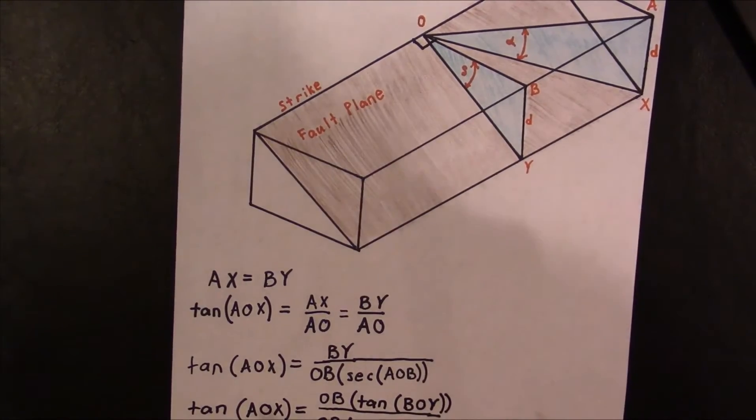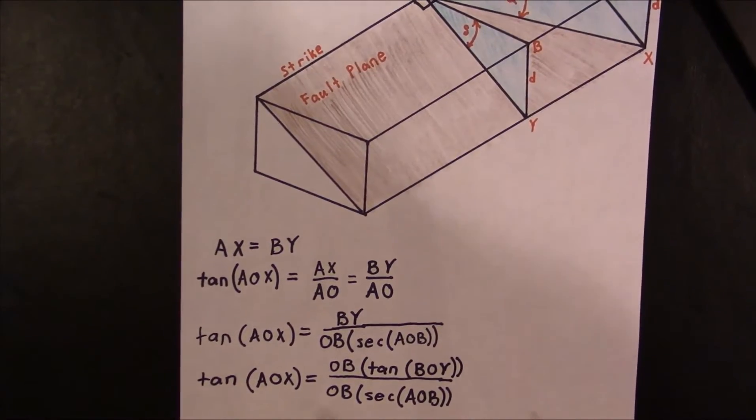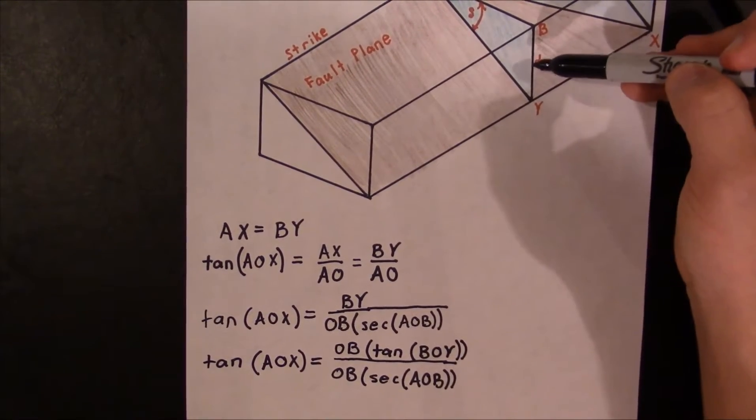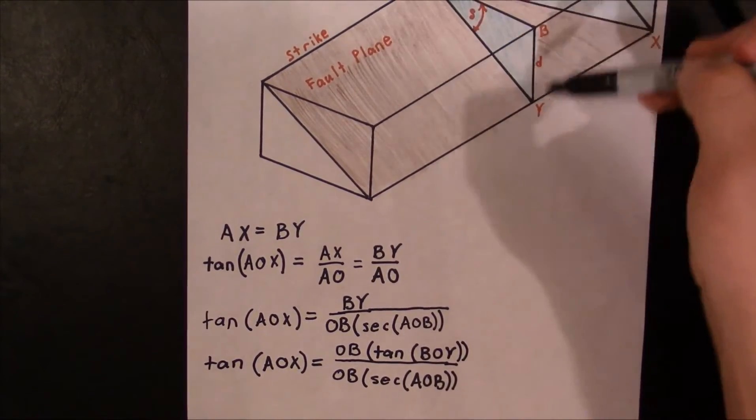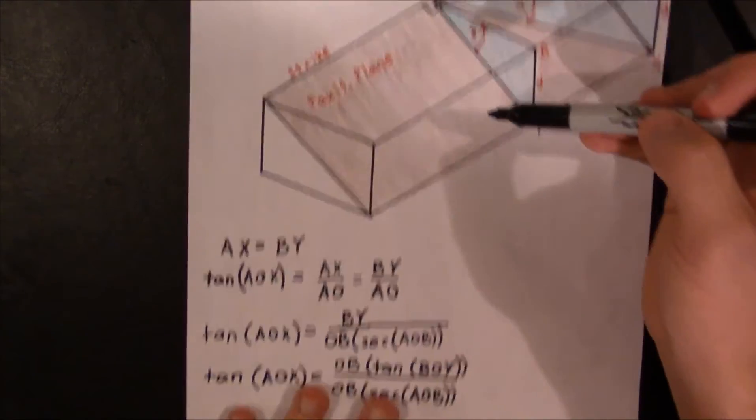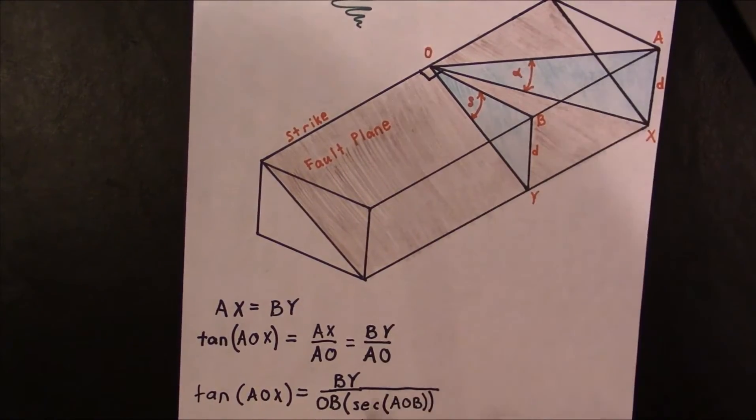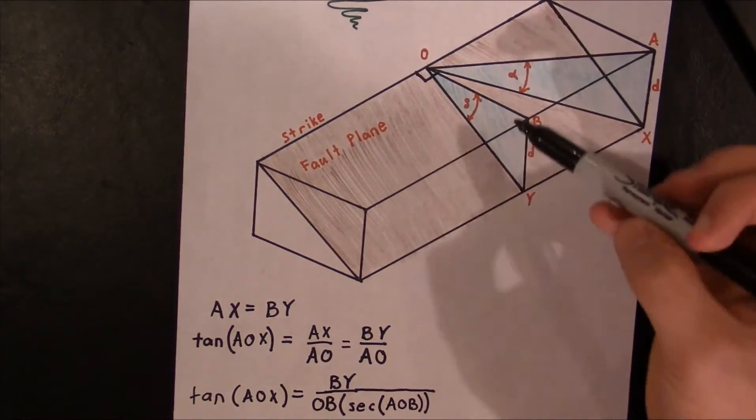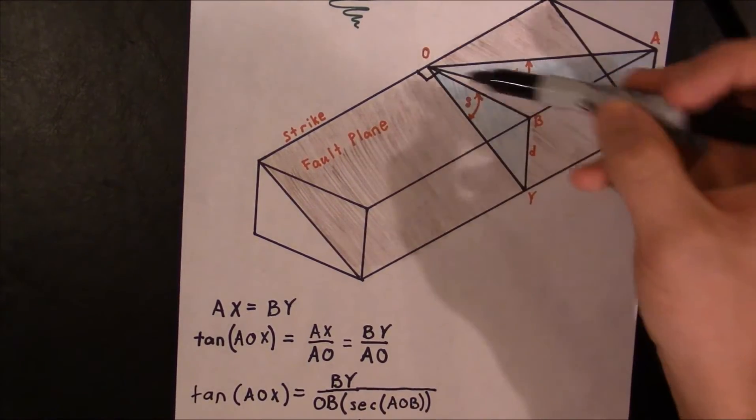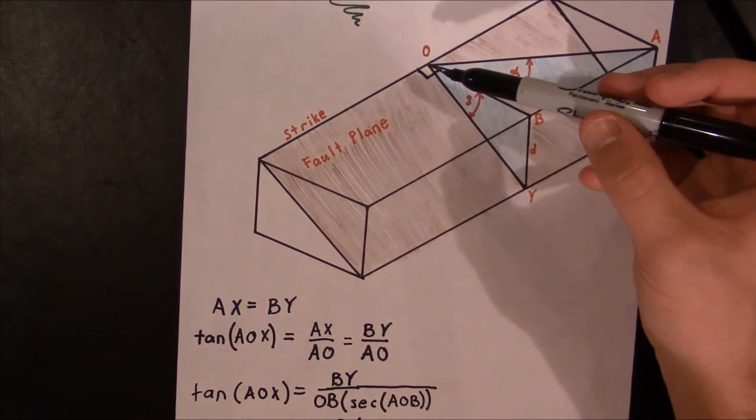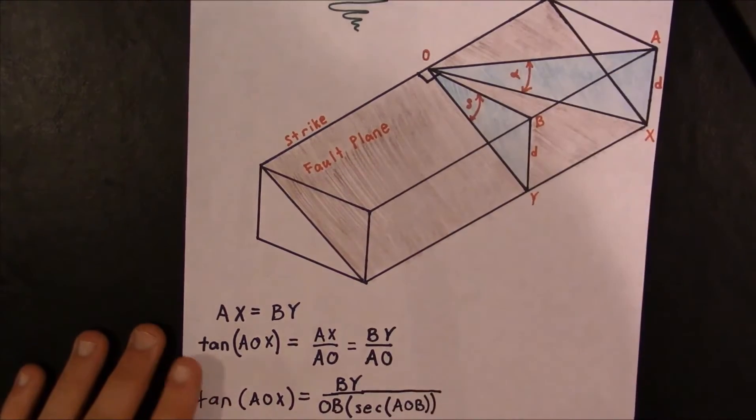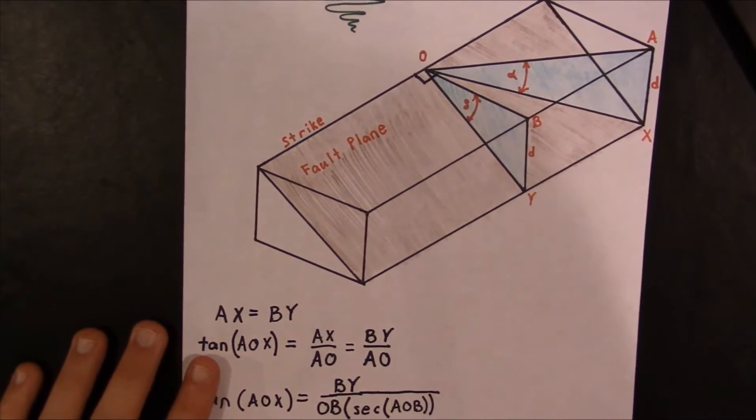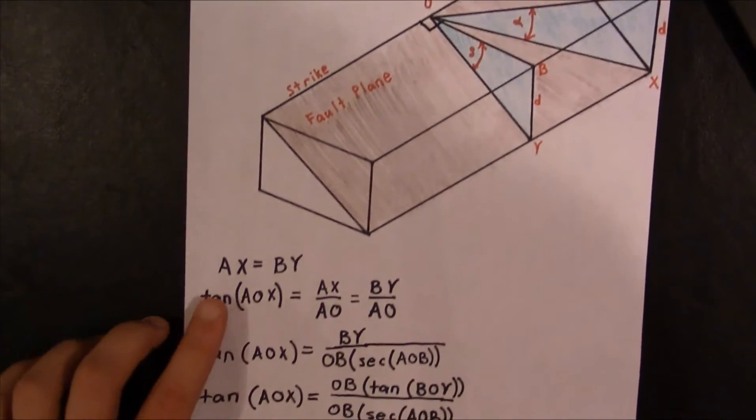And then this works through a similar method. What we can say is that BY right here, if we examine this triangle right here, the blue one, then what we can say is that the tangent of BOY is going to be the opposite over the adjacent, so in this case BY over BO. And if we were to multiply that out by OB, the OBs would cancel, and we would just be left with BY.